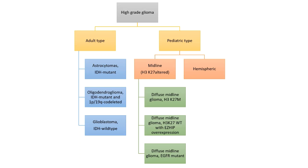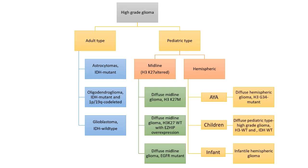Hemispheric tumors are further classified based on age group and genetic alteration. In adolescents and young adults, we have diffuse hemispheric gliomas H3G34 mutant. These are high-grade astrocytic tumors that have ATRX loss and TP53 overexpression and do not have IDH mutations. In children, we have diffuse pediatric-type high-grade gliomas wild-type for histones and IDH, with three subgroups based on DNA methylation: RTK1, RTK2 and MYCN amplification. Finally, the infantile hemispheric gliomas have fusions in tyrosine kinase receptors involving ALK, ROS1, NTRK and MET.